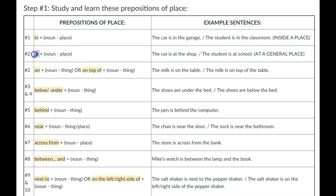'At' is very different. 'At' is not inside a room — it is just a general place, meaning around that area. For example, 'The student is at school.' I don't know where exactly at school — I don't know if the student is in the parking lot, in a classroom, in an office, or in a bathroom. I just know the student is around school, close to school, in the general area. So 'in' is for inside places, and 'at' is for general places, around that area.